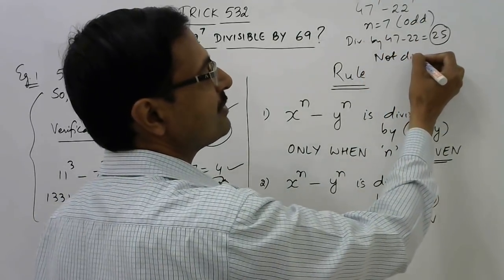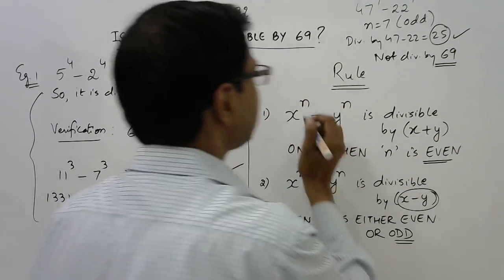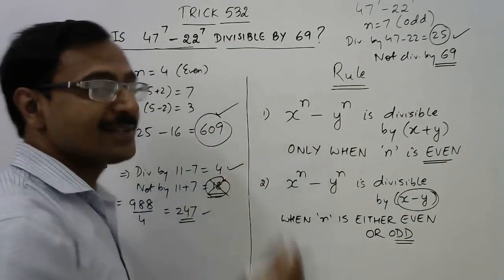So it is not divisible by 69. Divisible by 25 but not divisible by 69. So the answer for this question is not divisible.